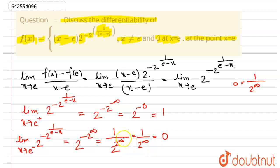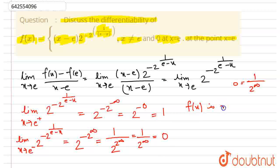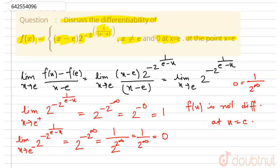So as both the limits don't agree — the right-hand limit is 1 and the left-hand limit is 0 — f(x) is not differentiable at x equal to e. Thank you.